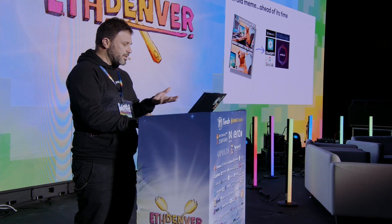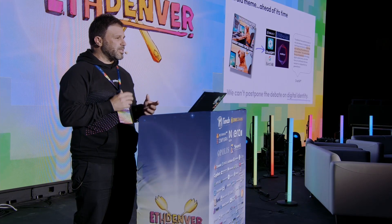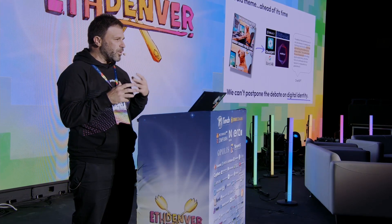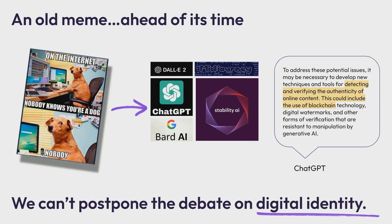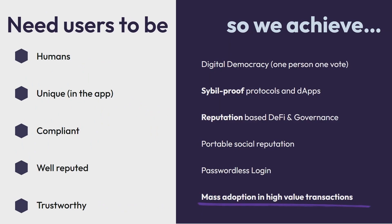This is making the identity topic go from a vitamin to a painkiller. It was a nice thing before, but now it's becoming something we really need to unblock some use cases. Even if you ask one of these AIs what the cure is for deepfakes, the answer that ChatGPT will give you is: use blockchain. We need users to be human, unique, compliant, well-reputed, and trustworthy so we can open all the other use cases.